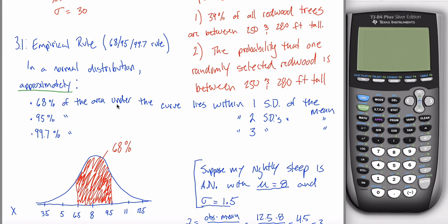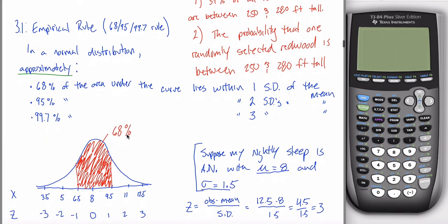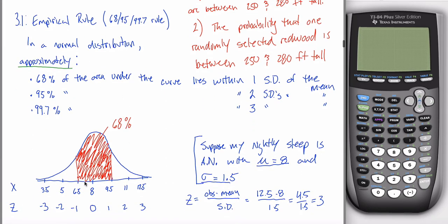Your calculator can give more precise answers and it can answer a wider range of questions. Imagine you wanted to know what percentage of nights I sleep between seven and nine and three-quarters hours — you couldn't use the empirical rule for that, because seven and nine and three-quarters don't correspond to z-scores of zero, plus or minus one, two, or three. The calculator doesn't have those restrictions.